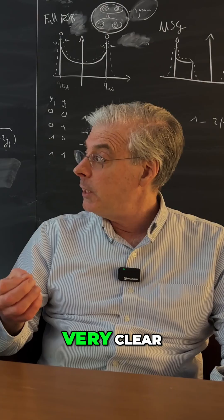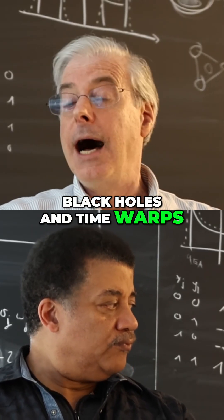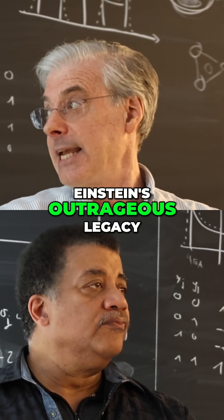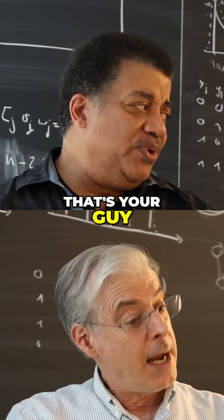The book is called Black Holes and Time Warps: Einstein's Outrageous Legacy. That's Kip Thorne, that's our book guy, that's your guy. We all love Kip Thorne.